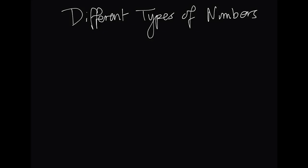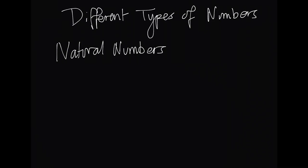Okay, first lesson is on different types of numbers. The first type of number that we're going to be looking at are natural numbers. Natural numbers are essentially counting numbers, however we just ignore zero. So the examples are 1, 2, 3, 4, 5 and so on. So that's a nice simple one.